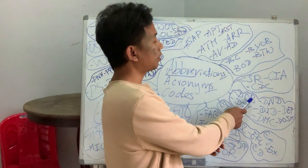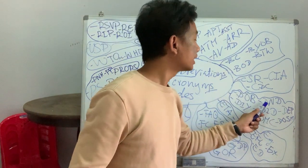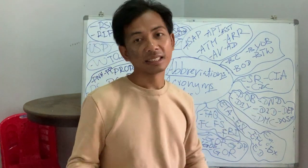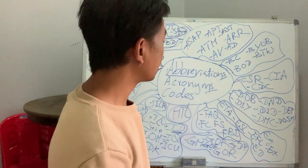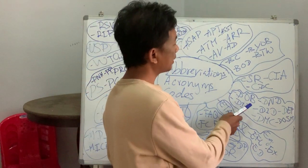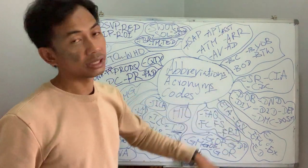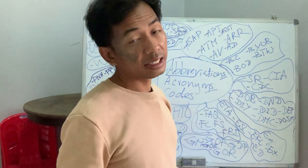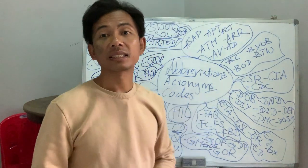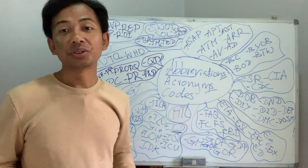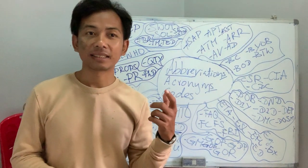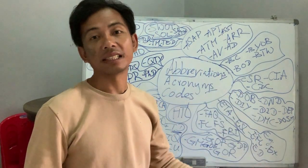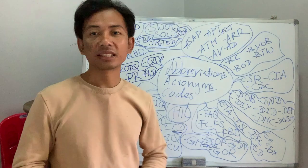Also in our country we have DOB — date of birth. DND — do not disturb. You see it in a hotel with a sign of DND — don't knock, don't disturb. DIY — do it yourself. DIY is very common as well — when they show you something and say this is a DIY, just try it yourself.